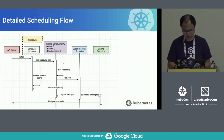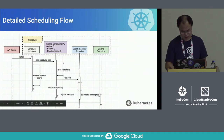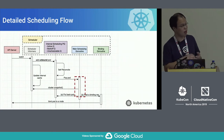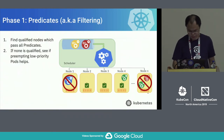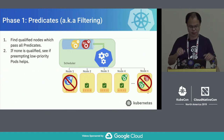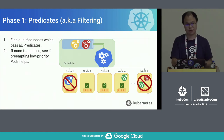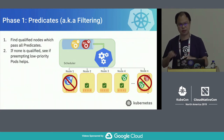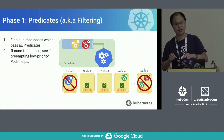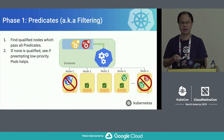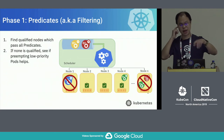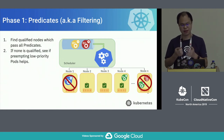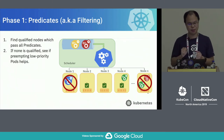Next, let's focus on the internal algorithm of how the main scheduling goroutine decides which node is best. There are two phases. The first is called predicates, also known as filtering. The scheduler goes through defined predicates that come from the pod API spec — like resource requests, pod affinity, et cetera — and maps those specs to specific predicates. It filters every node and gets a result set of nodes that pass all the predicates.